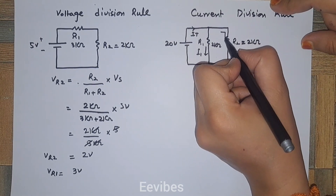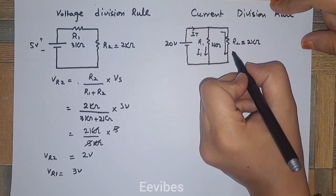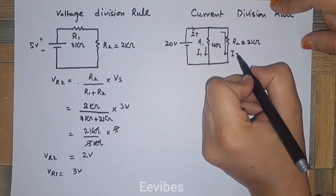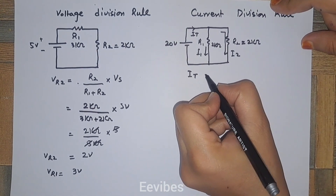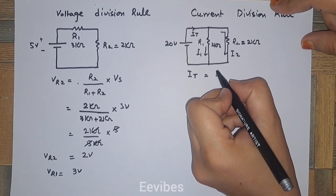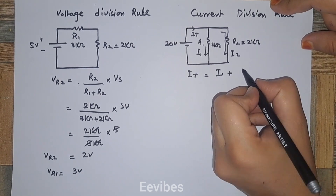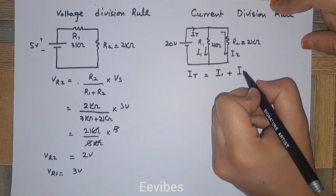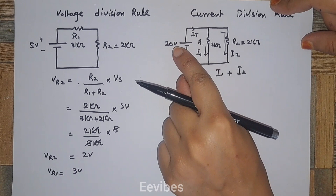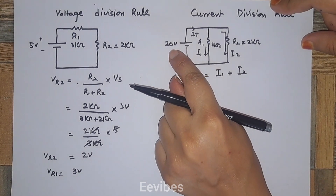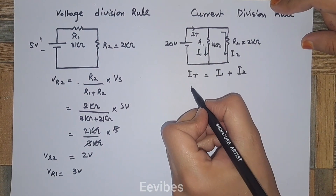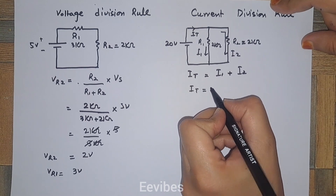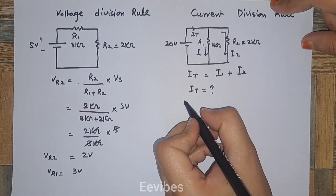If this is the total current IT, it will see two paths: this will be I1 and this will be I2. The total current IT will be equal to the summation of I1 and I2. If you have a voltage source connected here, we will first find the total current IT.